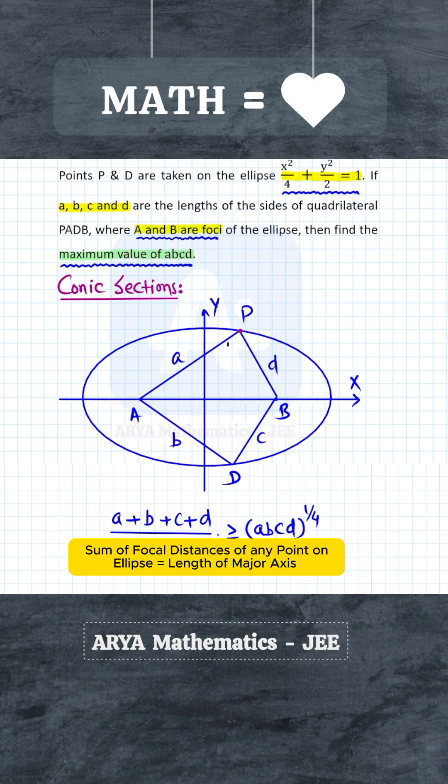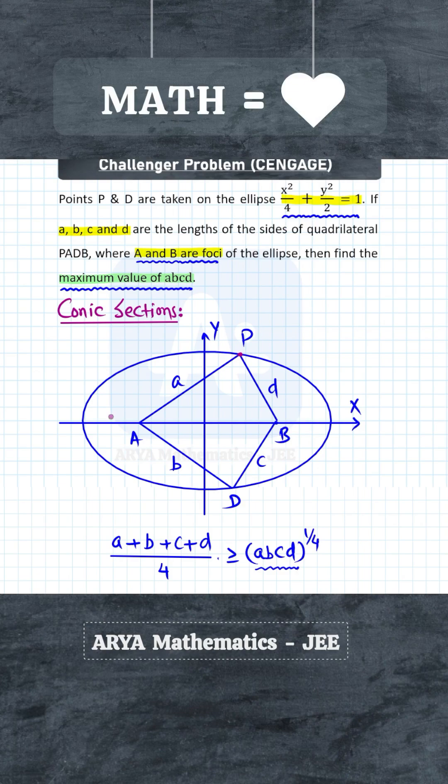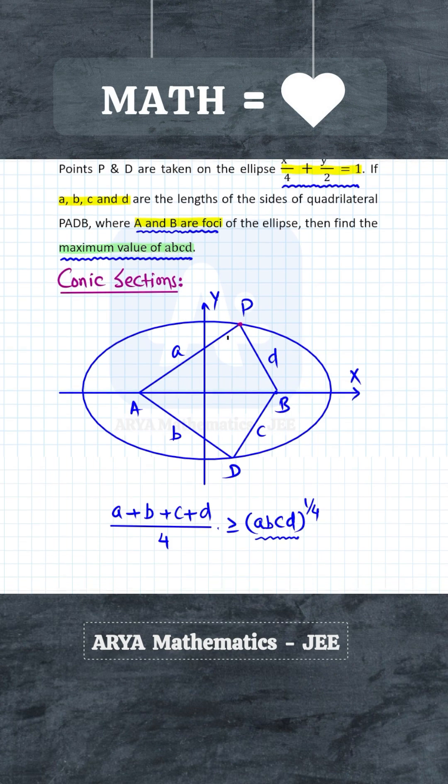Here the ellipse is X²/4 + Y²/2 = 1. So A² is 4, that means A will be 2, and the length of the major axis is 2A. So the length of the major axis will be 4 units.